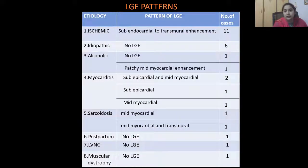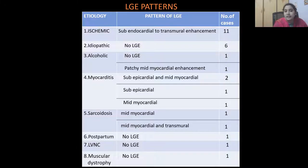LGE findings by type: ischemic DCM showed sub-endocardial to transmural enhancement in all 11 cases. Idiopathic DCM — no late gadolinium enhancement in all 6 cases. Alcoholic DCM — one case with no LGE and one case with patchy mild mid-myocardial enhancement. Post-myocarditis — sub-epicardial and mid-myocardial involvement; one case with sub-epicardial and one case with mid-myocardial enhancement. Sarcoidosis — one case with mid-myocardial and one case with mid-myocardial and transmural involvement. Postpartum DCM and LVNC — no late gadolinium enhancement in each case. Duchenne's muscular dystrophy — no late gadolinium enhancement.